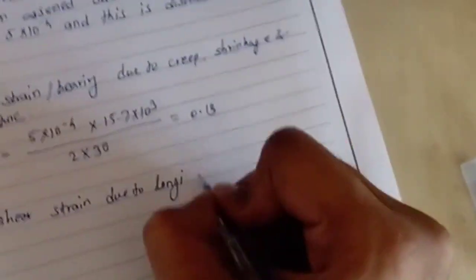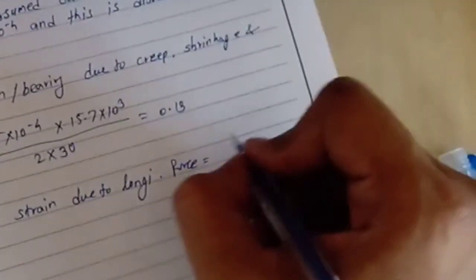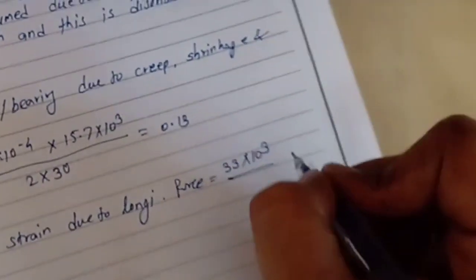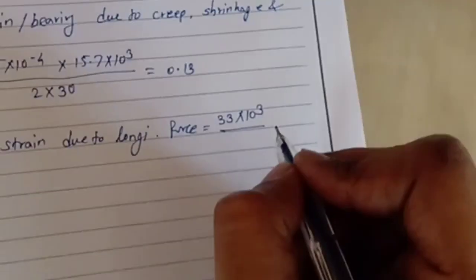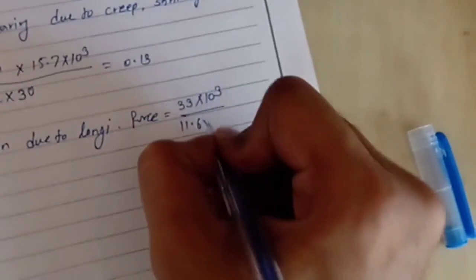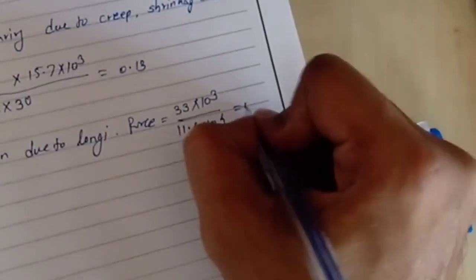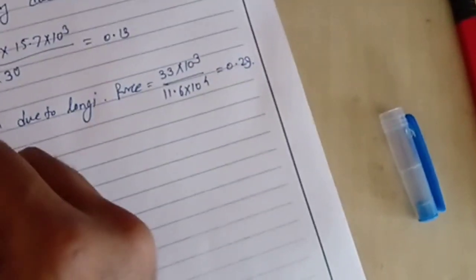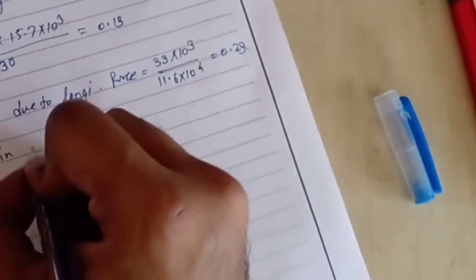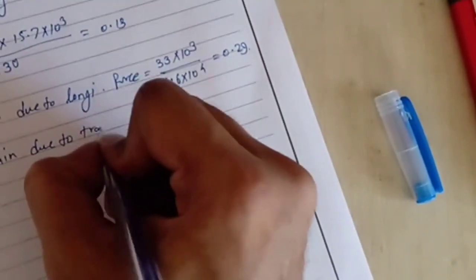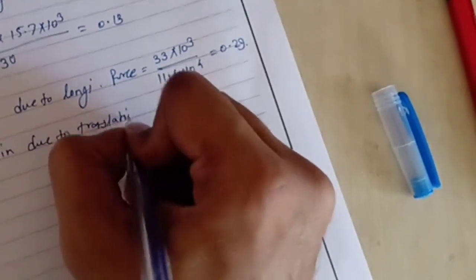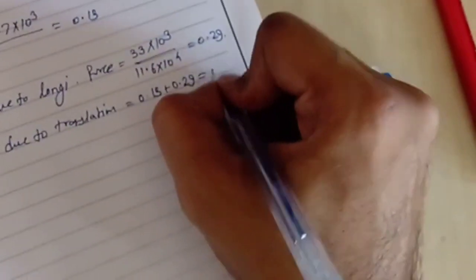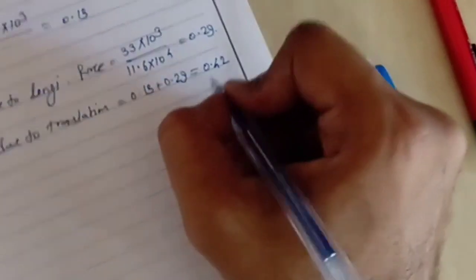the longitudinal force, which is 33 x 10^-3 divided by the loaded area 11.6 x 10^-4, that becomes 0.29. So now total shear strain due to translation: that is 0.13 plus 0.29, which is 0.42, which is lesser than 0.7, hence okay.